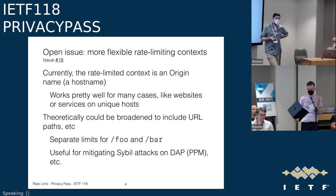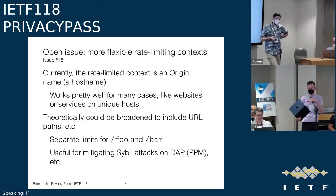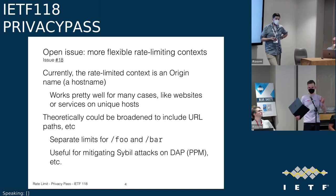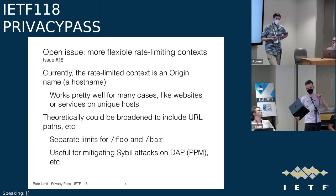Chris: This is primarily a deployment convenience thing — rather than spinning up separate origins for different resources, maybe in the DAP case or other application-specific cases, you could just add the application layer in the origin info in the token challenge. The origin info elements could be not just origins, but URLs or whatever else makes sense for the application. I'm happy to send a PR for this.